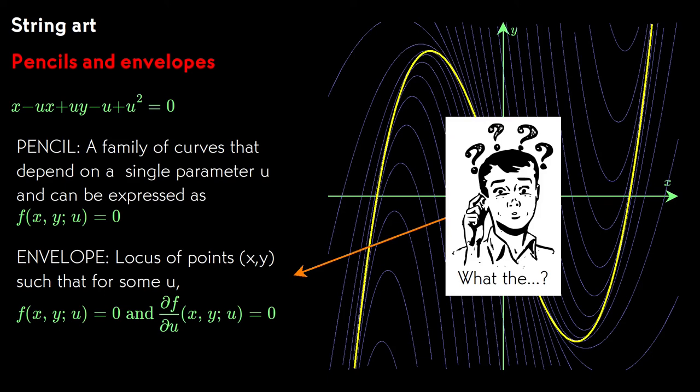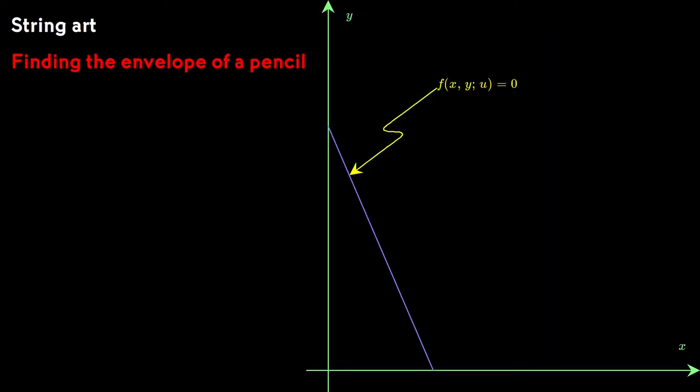Let's begin by drawing one element of the pencil for some value u of the parameter. Draw another element of the pencil corresponding to a value of u plus h for the parameter for some small value of h.